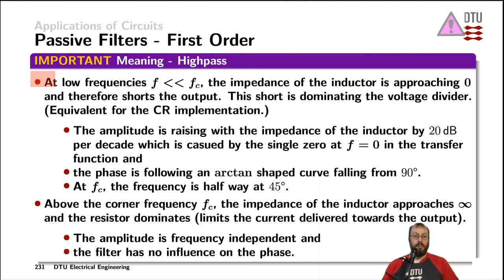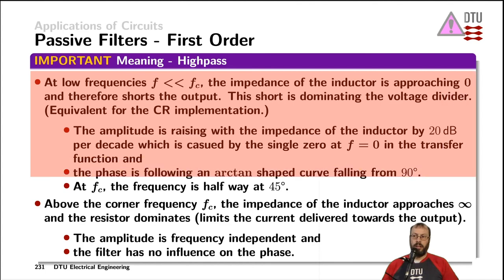For low frequencies below the corner frequency, the inductor has a very low impedance and shorts all the signal across the output, so no voltage is applied over the load. In the case of the capacitor implementation, it is vice versa: the capacitor blocks all the low-frequency voltage, as its impedance is rather high, and therefore no voltage reaches the resistor in parallel with the load.